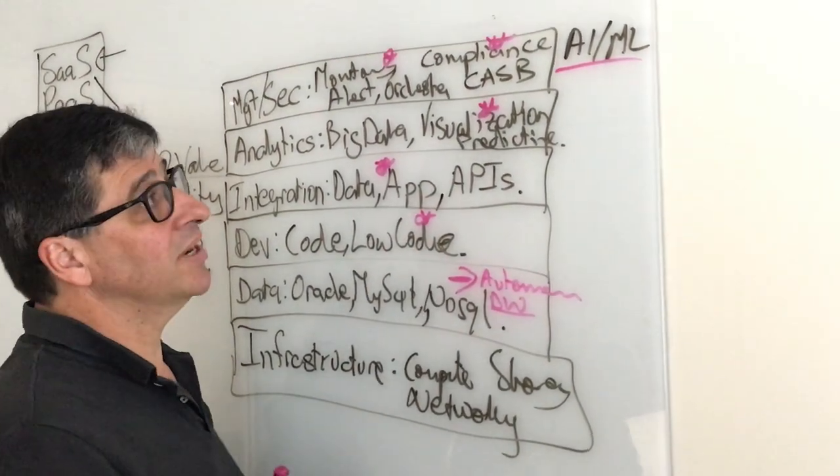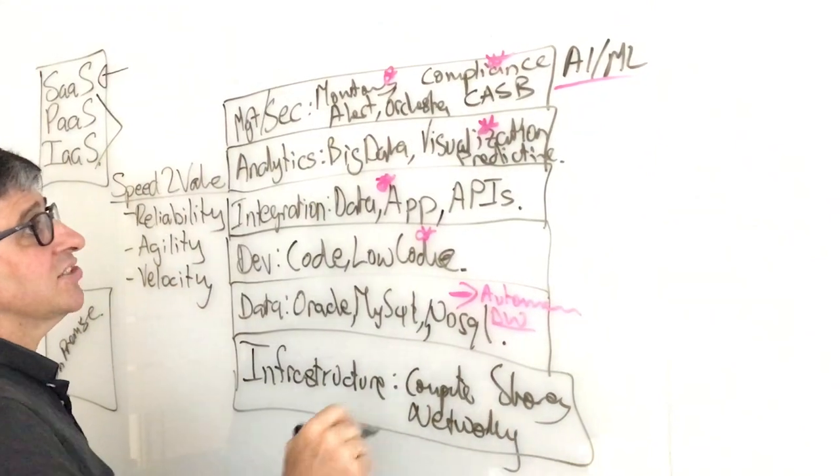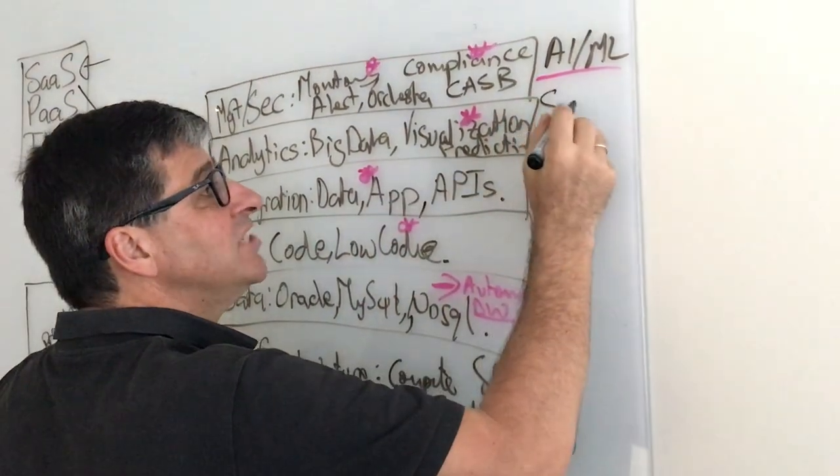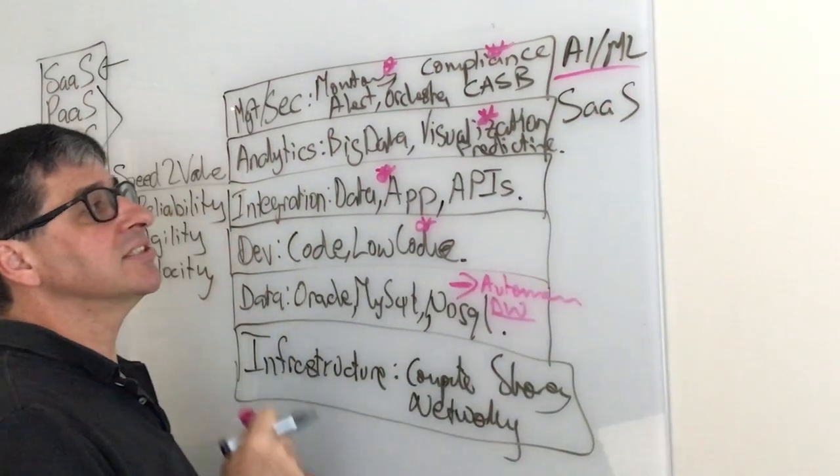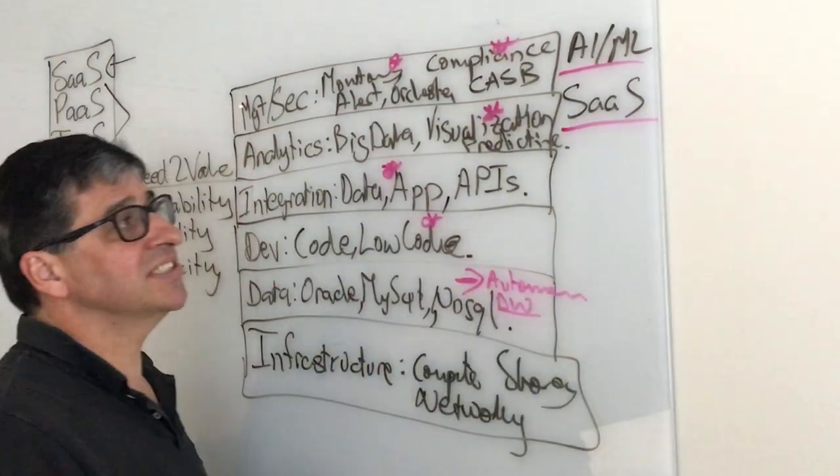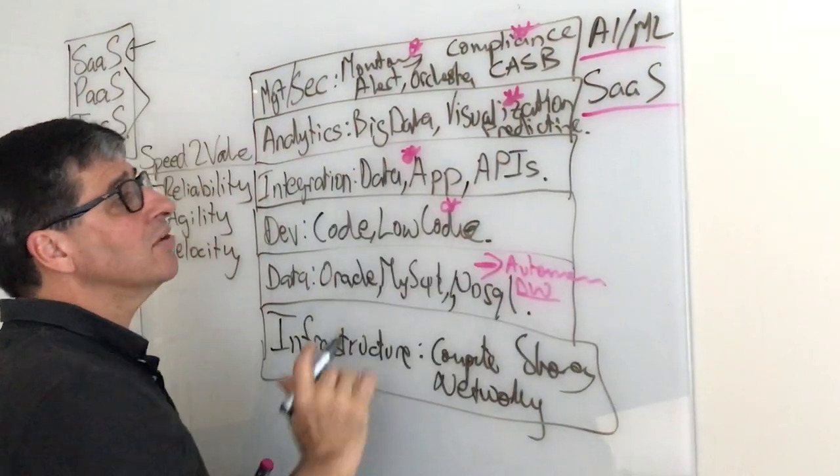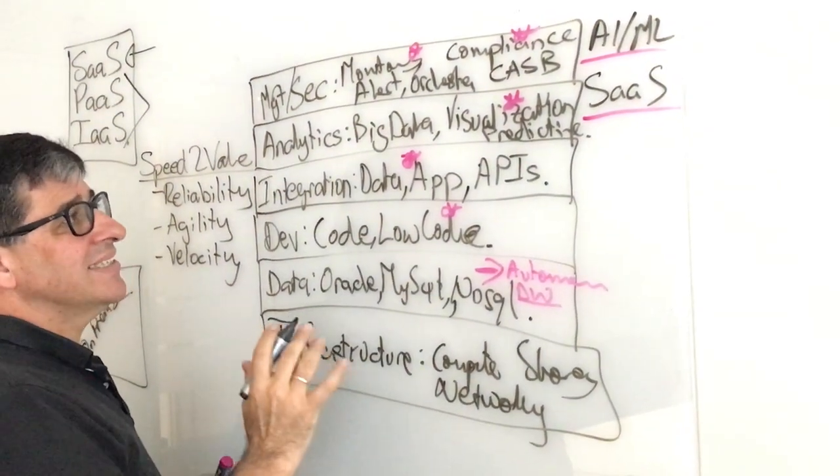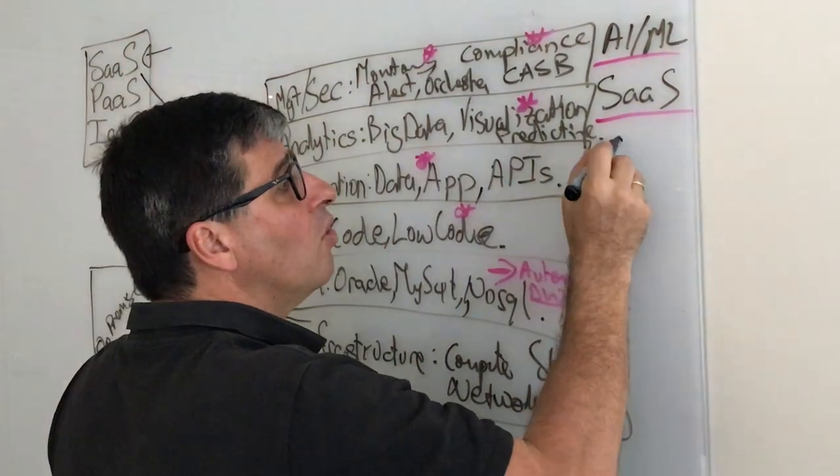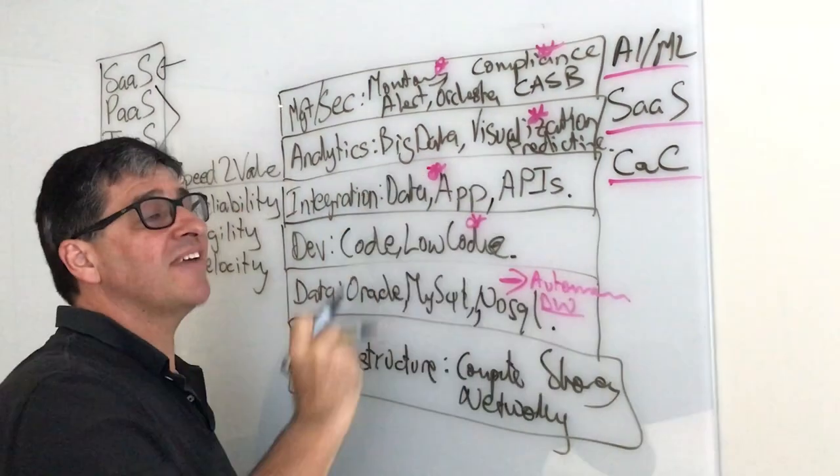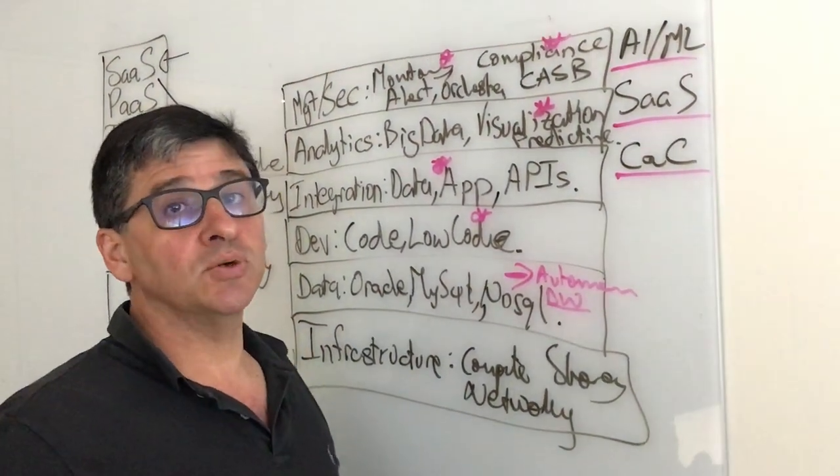Alongside the autonomous data warehouse, we've got the autonomous machine learning capability. The other thing that's very exciting is you can use this tooling to extend your SaaS applications in exactly the same way. Because Oracle runs this in the Oracle public cloud, Oracle also makes this capability available in another form called Cloud at Customer.